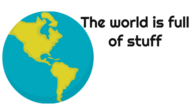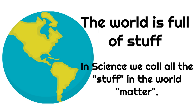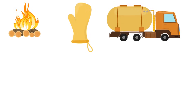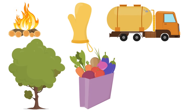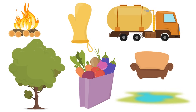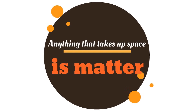As we get into our lesson today, the first thing we want to mention is the world is full of stuff. And in science, we call all the stuff in the world matter. So literally, everything in our world is matter. Fire is matter. An oven mitt is matter. A truck is matter. A tree is matter. A bag of food is matter. A chair is matter. Water is matter. Anything that takes up space is matter.